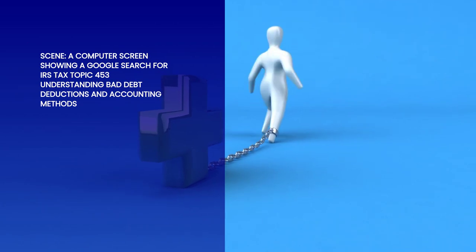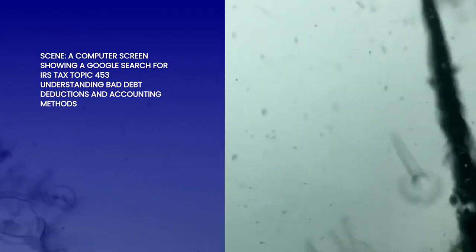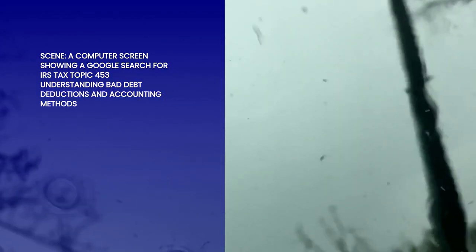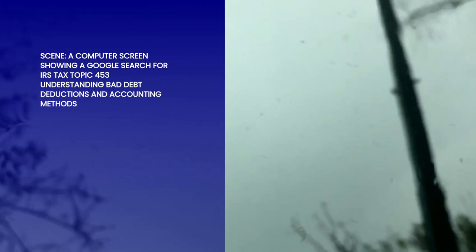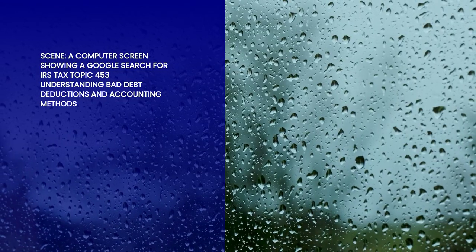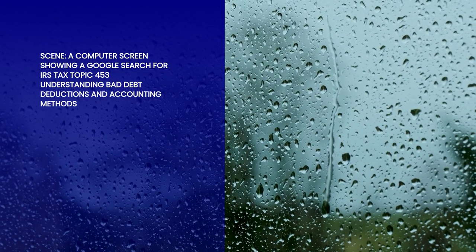If you lend money to a relative or friend with the understanding that you expected them to pay it back, then you can write it off and take a bad debt deduction on your taxes. If you have a tax agent who insists on using the cash method of accounting, get yourself a different tax agent.